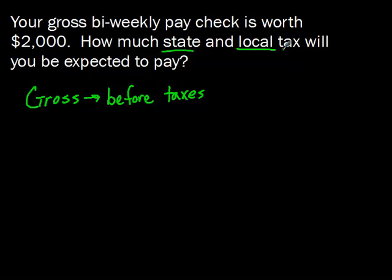There are other taxes out there such as federal, OASDI, and FICA Medicare. They are all federal programs that are also other types of taxes that are taken out. But for this problem we're not dealing with them. We know that our gross pay is $2,000, and we're looking at state and local tax.